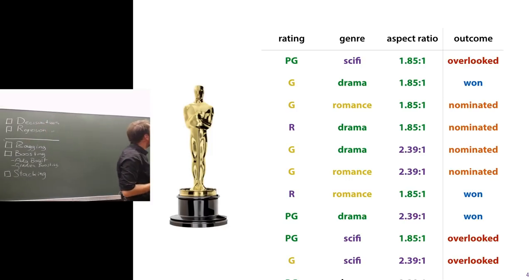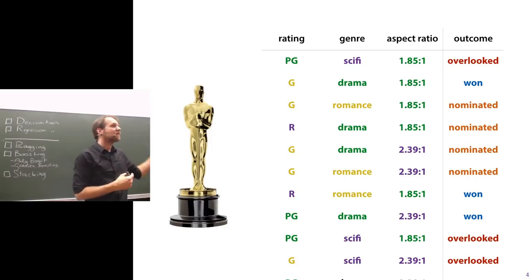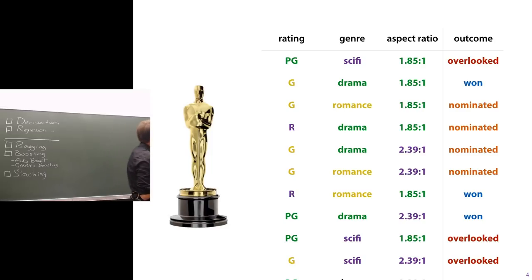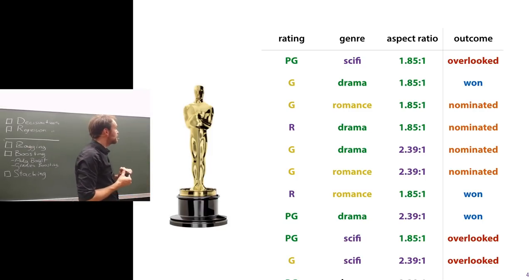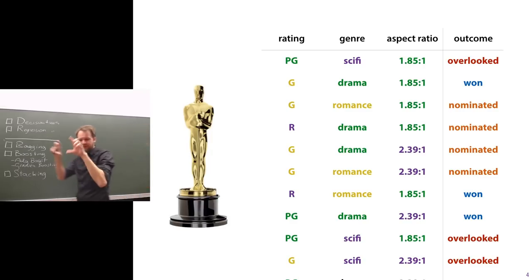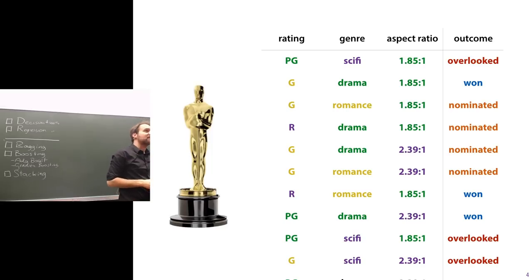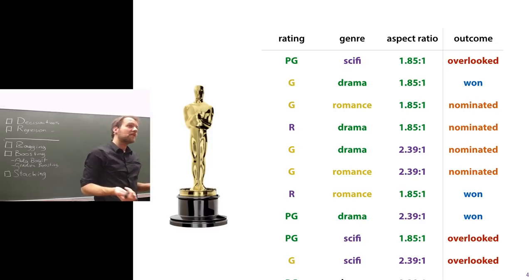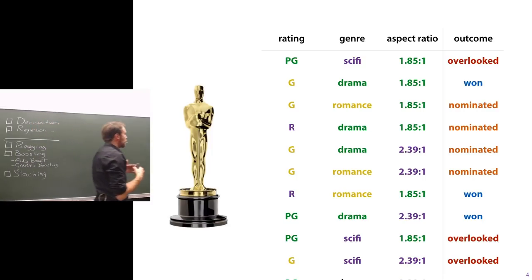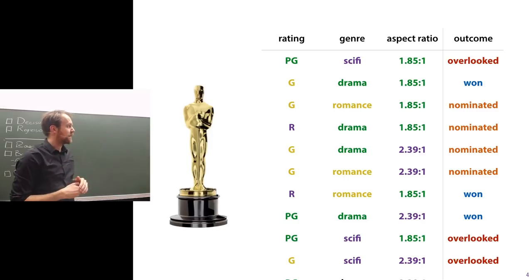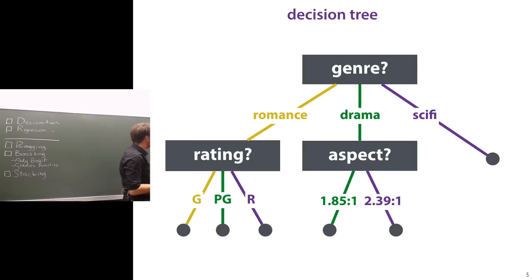Around this time of year it's relevant to talk about the Oscars, so here we have a dataset of movies. Every row is a movie, and we have three features: the rating (G, PG, or R), the genre (sci-fi, drama, or romance), and the aspect ratio of the screen format. The three classes we want to predict are: overlooked for the Oscars, nominated but didn't win, or won an Oscar.